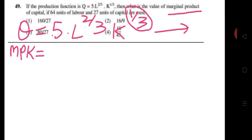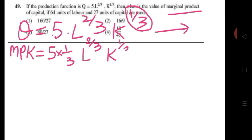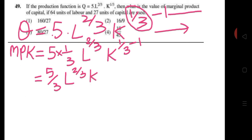So the 1/3 exponent of K becomes the coefficient: 1/3 × 5 = 5/3. L to the power 2/3 remains the same because we are differentiating with respect to capital. And K becomes K to the power (1/3 − 1), which is K^(−2/3), by the power function rule. So this becomes 5/3 × L^(2/3) × K^(−2/3).